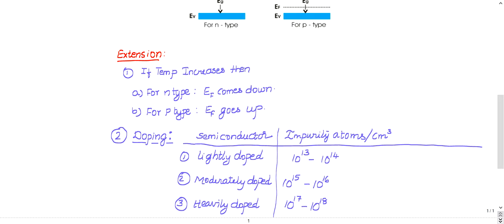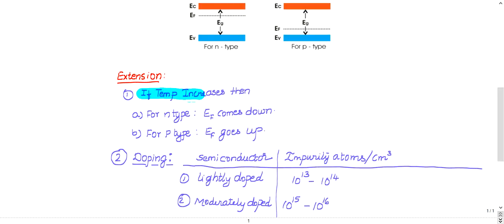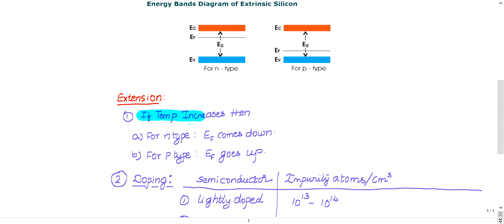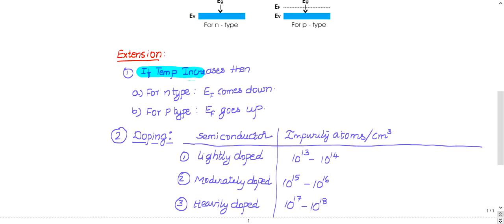The extension: if temperature increases, then for n-type materials, EF will come down — it will move from the conduction band slowly towards the valence band. Initially for n-type, EF is near the conduction band; if you increase temperature, it slowly comes down. For p-type materials, at room temperature EF is near the valence band, but if you increase temperature, it will move up.